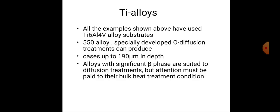All examples shown above use Ti-6Al-4V (titanium with aluminum and vanadium) alloy substrate, specifically a 550 alloy. Specially developed diffusion treatments can produce cases up to 190 micrometers in depth, allowing significant beta phase distribution. Attention must be paid to the bulk heat treatment conditions during diffusion treatment.